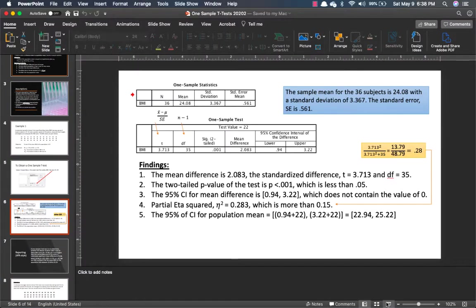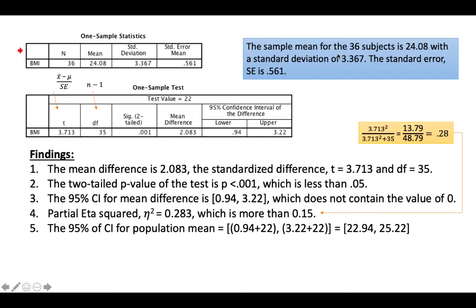So let's go back here. Sample mean for the 36 subjects is 24.08 with a standard deviation of 3.367. Standard error is equal to 0.56. So this is how you calculate the t-score, and this is how you calculate the df over here. The findings is that the mean difference is 2.083 over here. Standardized difference, which is t, is 3.713.